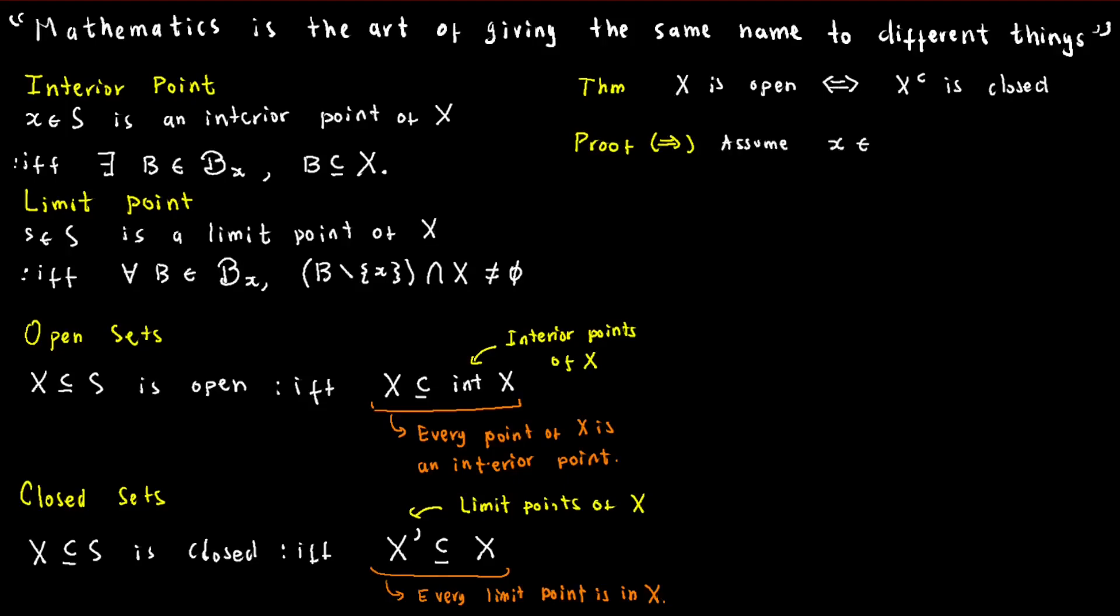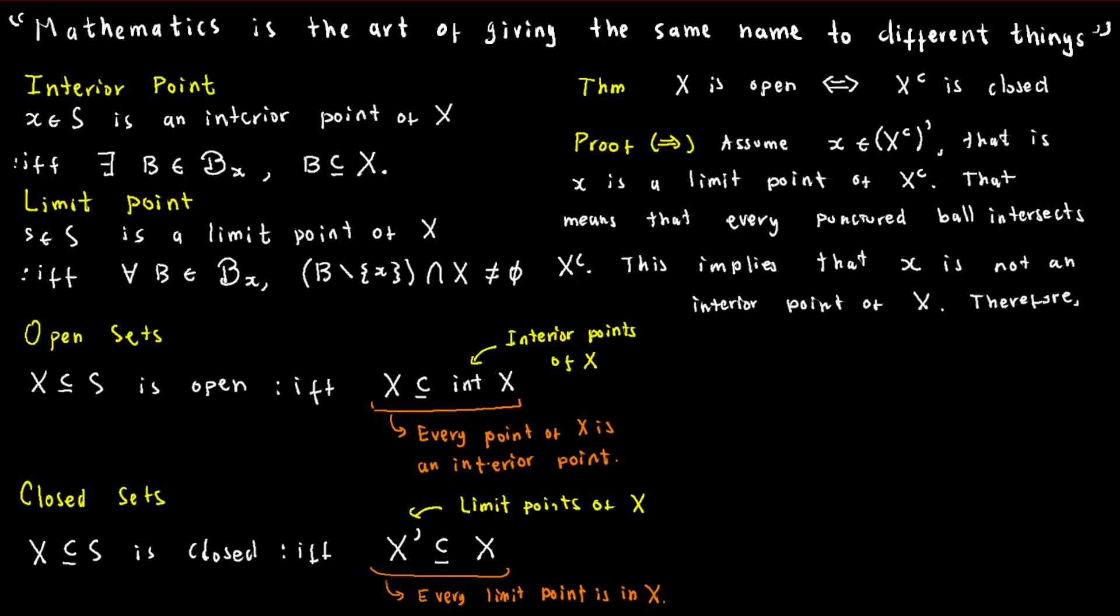To prove this statement, let's assume that X is open and x is a limit point of X's complement. Because x is a limit point, every open ball around x intersects X's complement. This means that x cannot be an interior point of X and hence it is not contained in X.